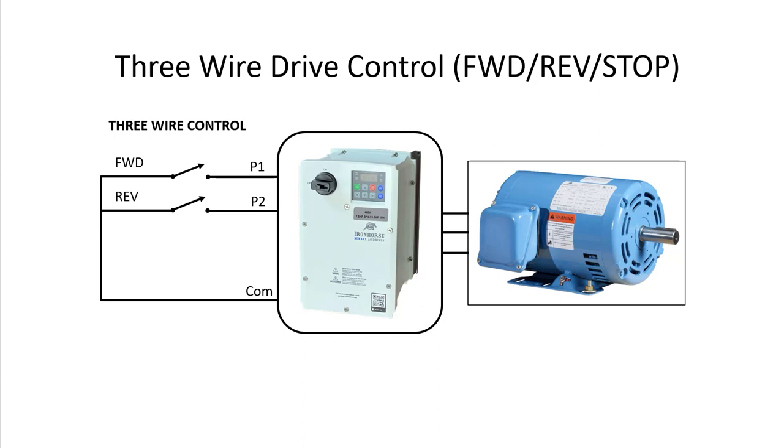To change to 3-wire control, just swap the selector switches with momentary switches and add a third normally closed momentary switch for stop control. We'll use input terminal P3 for that.